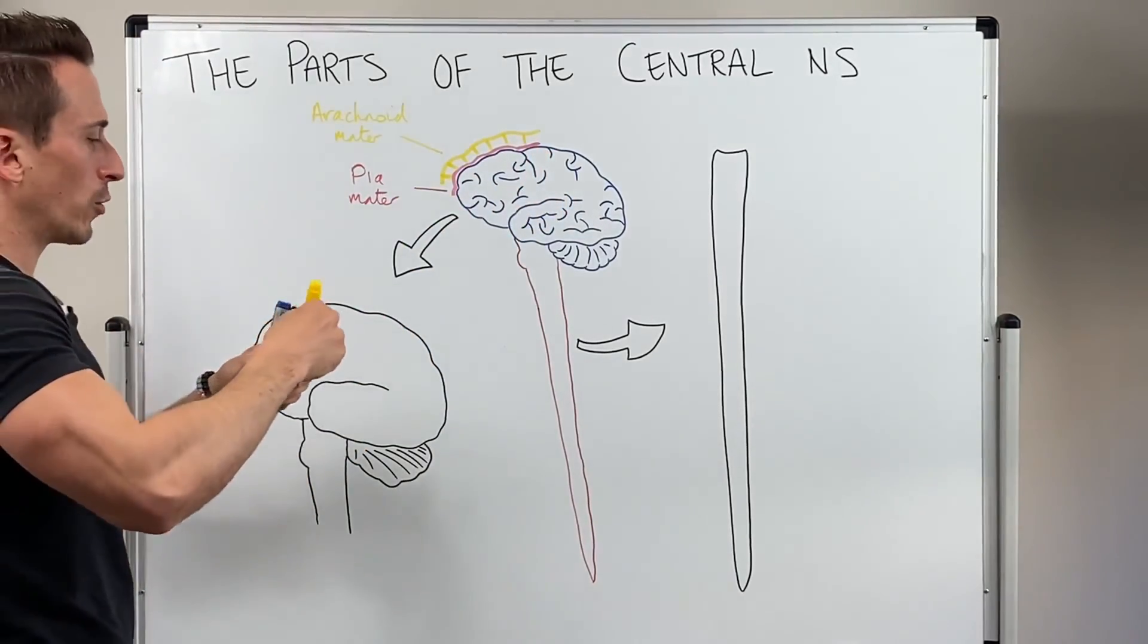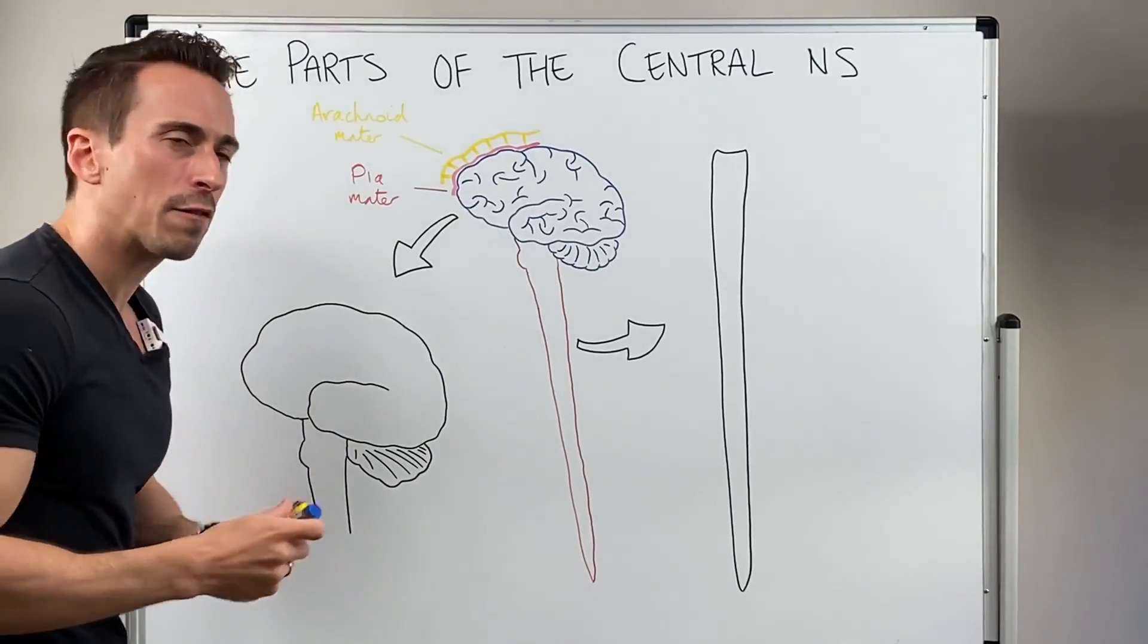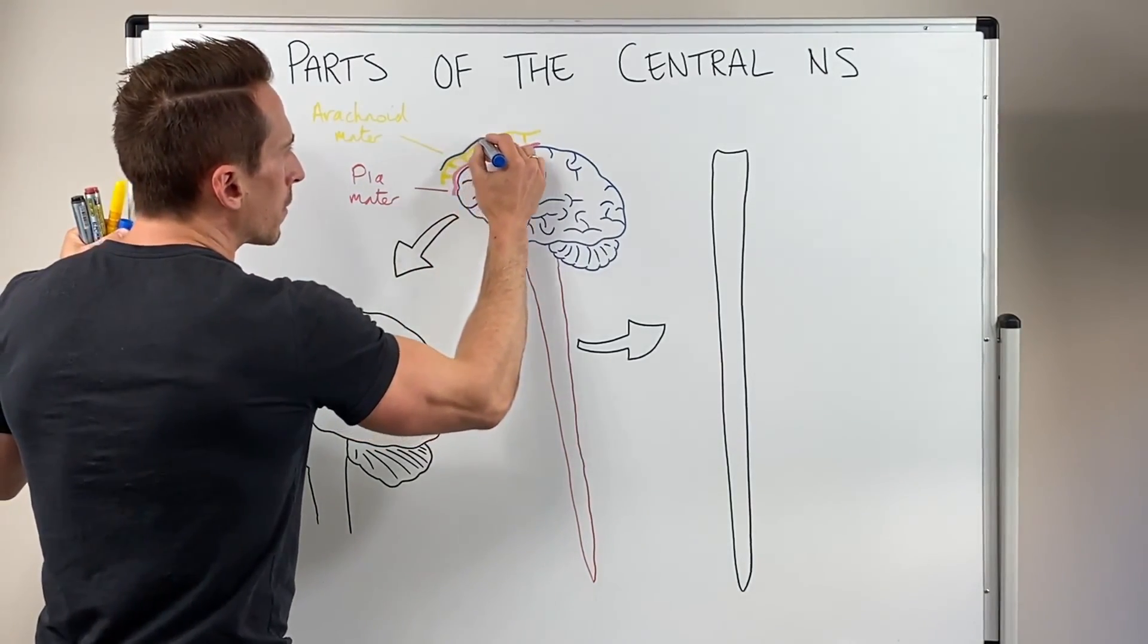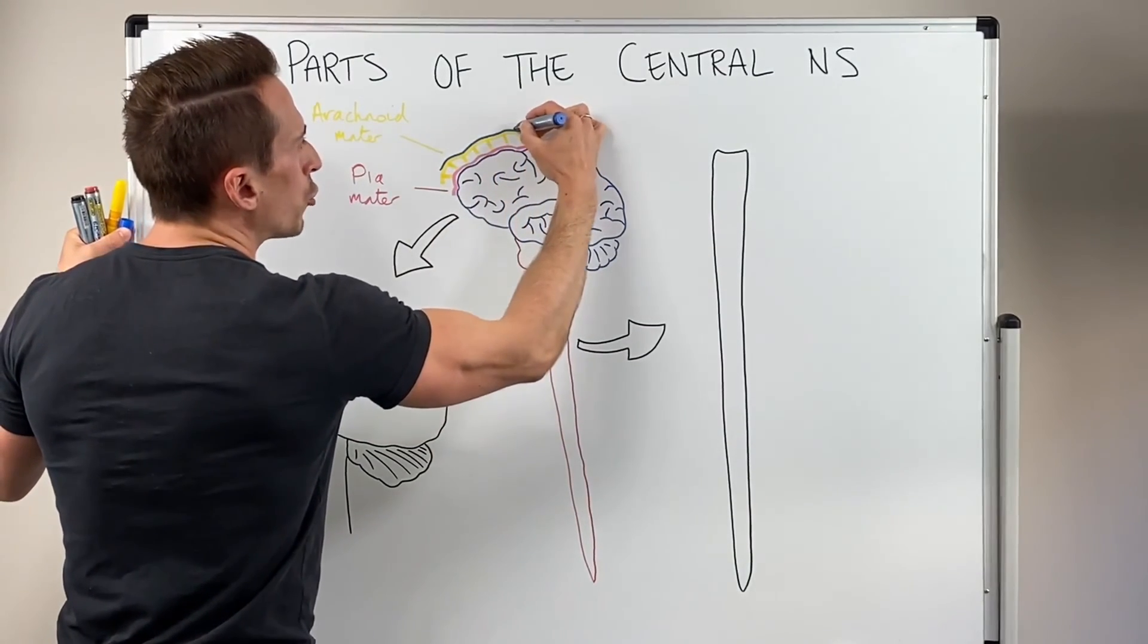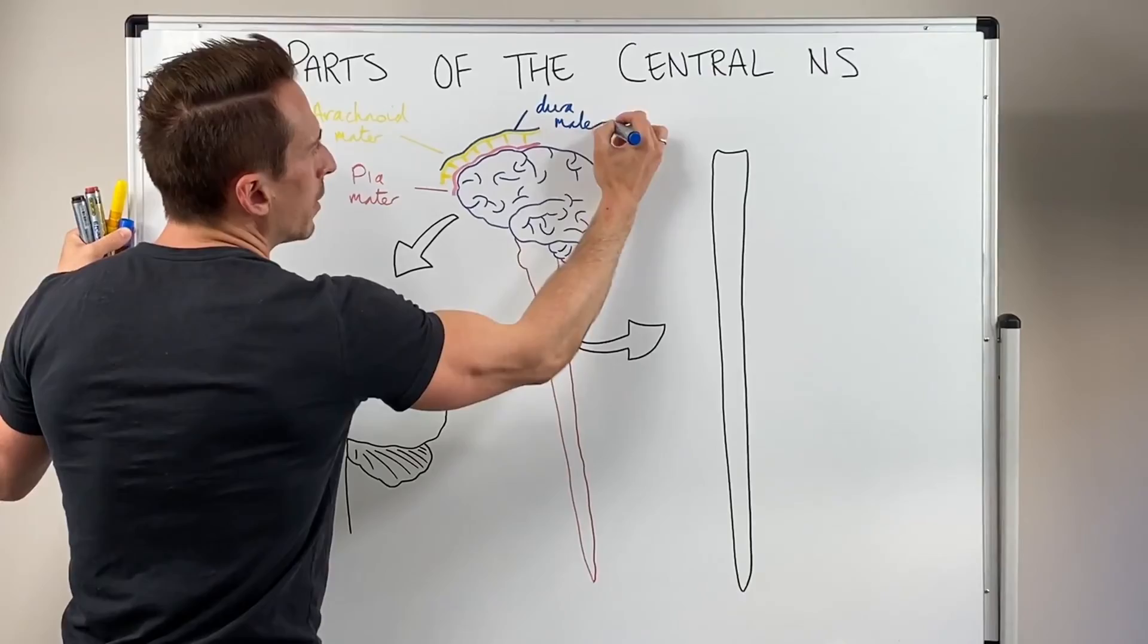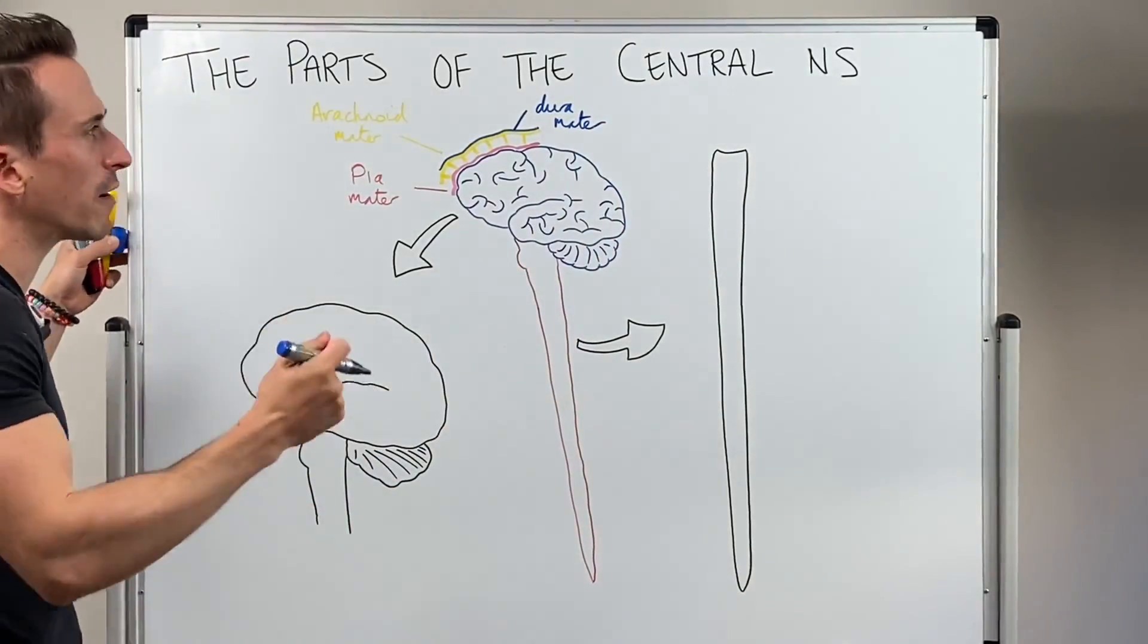Now on top of the arachnoid mater, we've got a very tough layer called the dura mater, which means tough mother. And it's like a paper bag consistency, very tough.